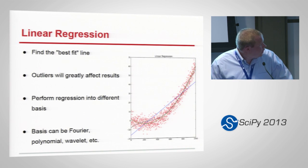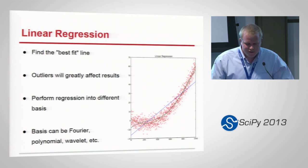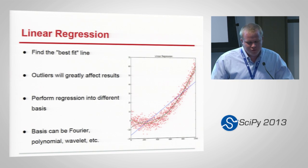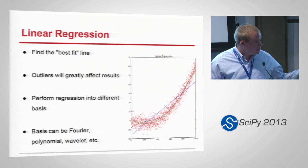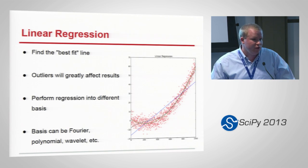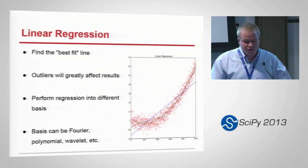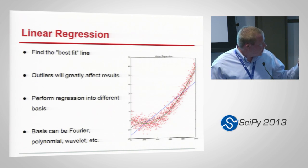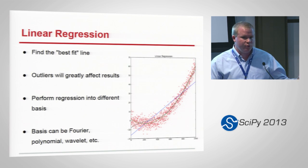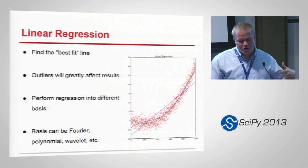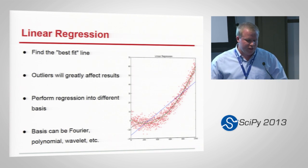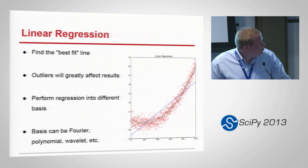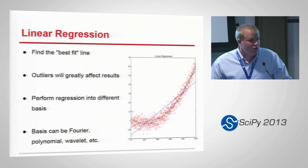So, linear regression. We want to find the best fit line for a particular set of data. In this case, this is a random data set generated with sklearn data generation tools. We can see that there are three different line fits: a linear line fit, a Fourier regression fitting with a series of sine waves, and a polynomial regression. You can see how all of these different regressions have fit to our data set and how that could be used to predict new data coming in.